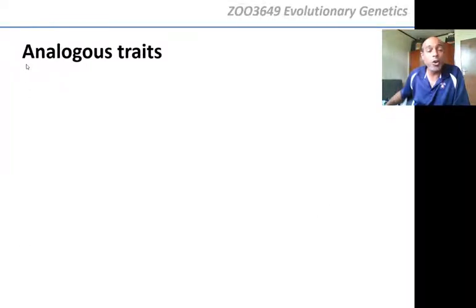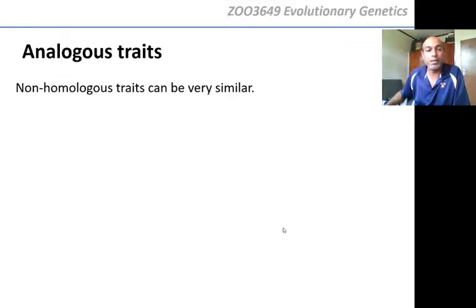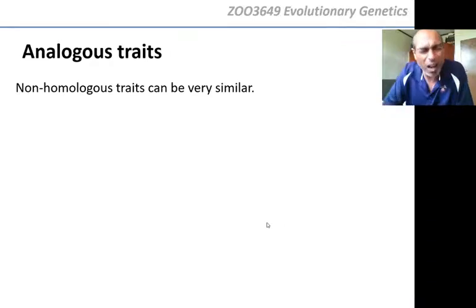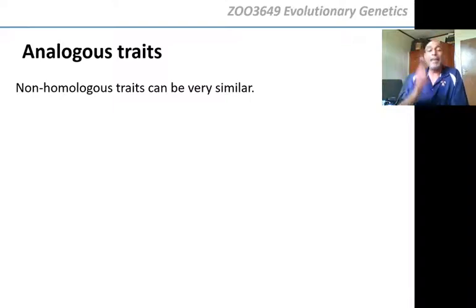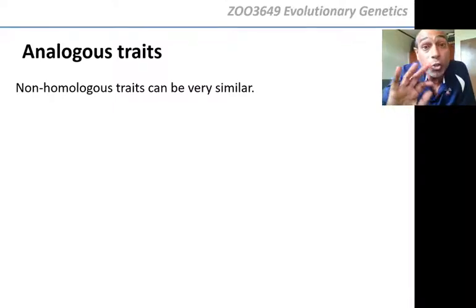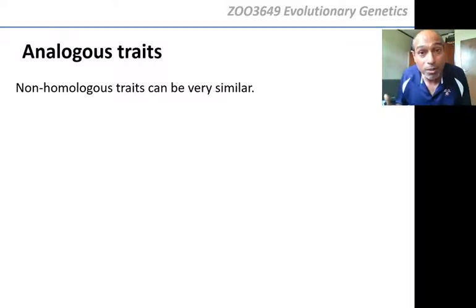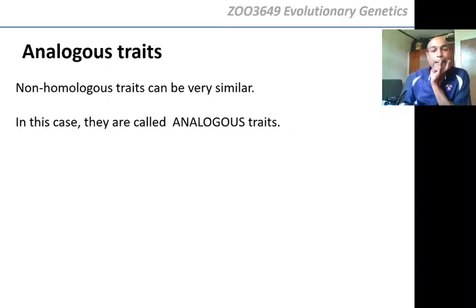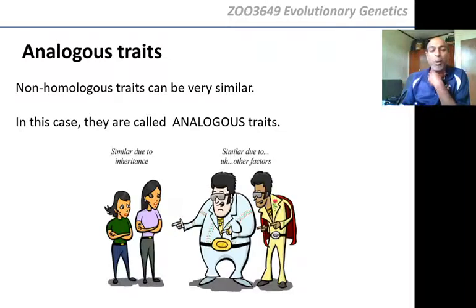Analogous traits are very annoying because they can look very similar — sometimes so similar you think they are homologous, but they are not. Let's look at a couple of examples.